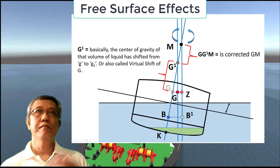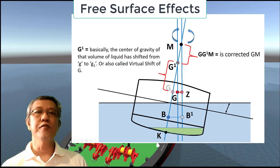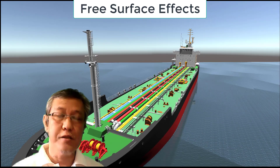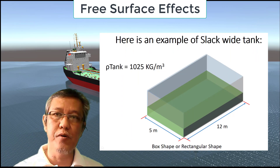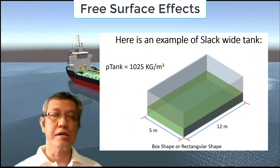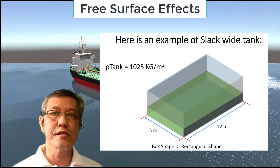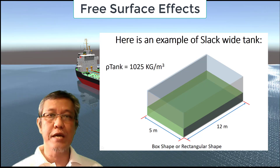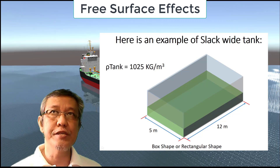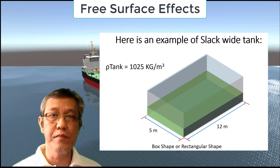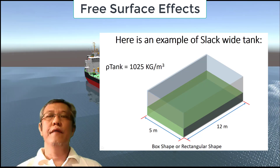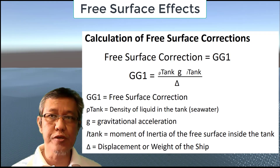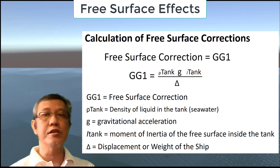This is quite very significant with your stability of your vessel. Now let's try to prove this free surface effect by setting an example. In this image here, you can see that there is a sample of a rectangular-shaped box, or let's just say it's a tank — a liquid-content tank with a breadth of 12 meters and a length of 5 meters. Let's assume the density of seawater is 1025 kg per cubic meter. And with this formula here to guide us for the calculation of free surface correction, or GG1, of course, to the density of the tank.